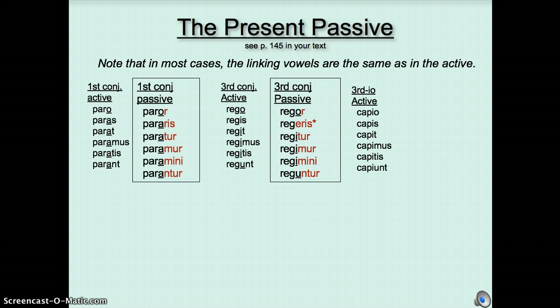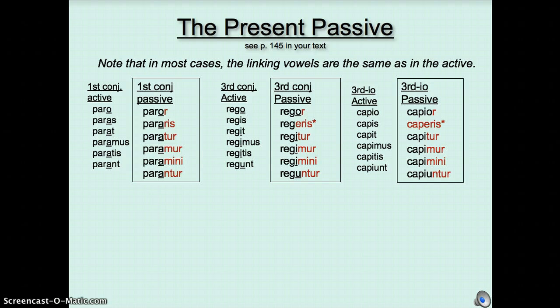Third IO looks like capio, capis, capit, capimus, capitis, capiunt, in the active. And in the passive, capior, caperis, again an exception, capitur, capimur, capimini, capiuntur. Note that the exceptions happen in the third and third IO, and their linking vowel in the second singular is E instead of I.